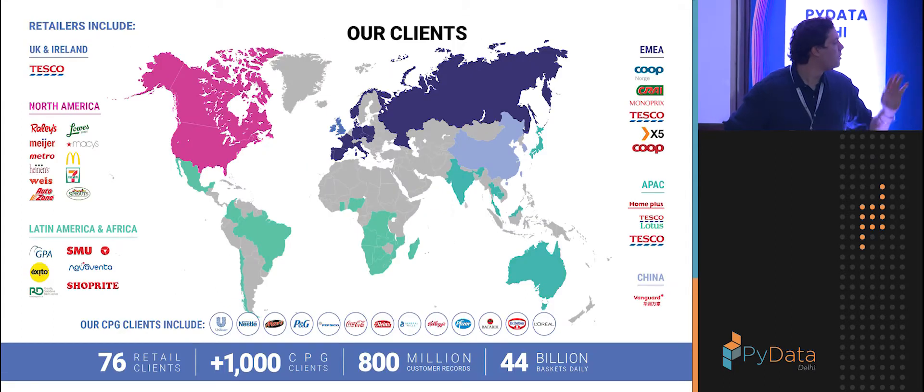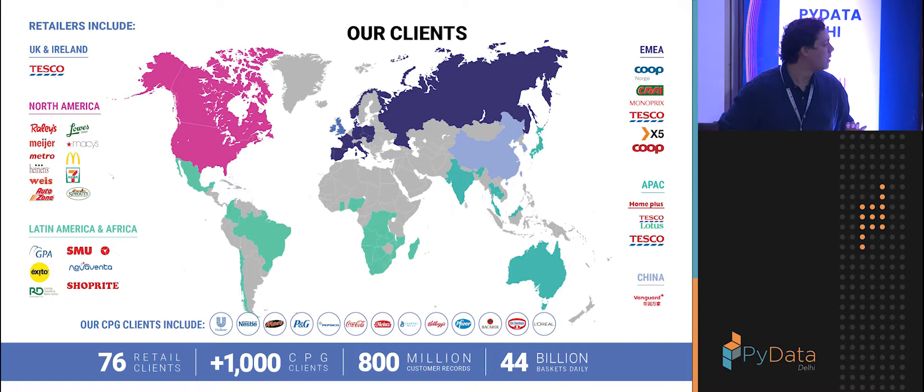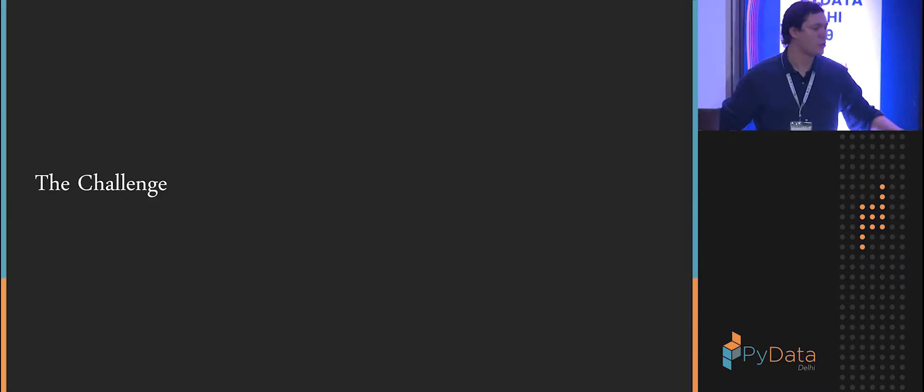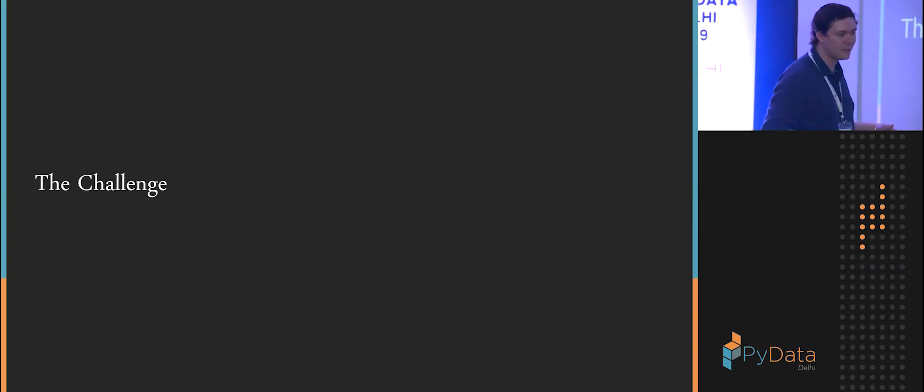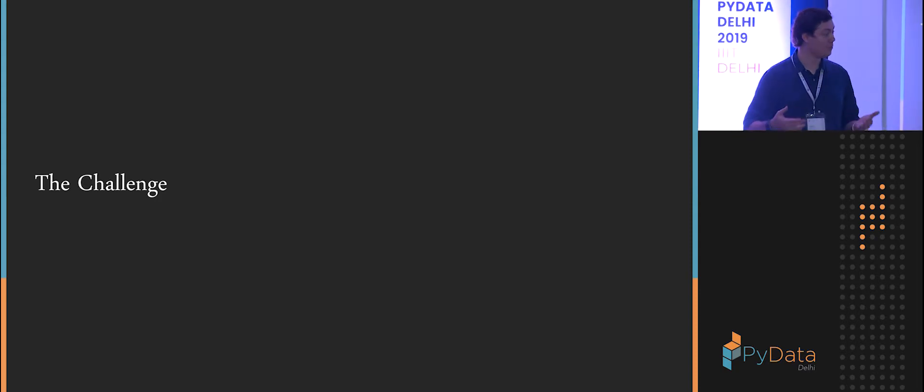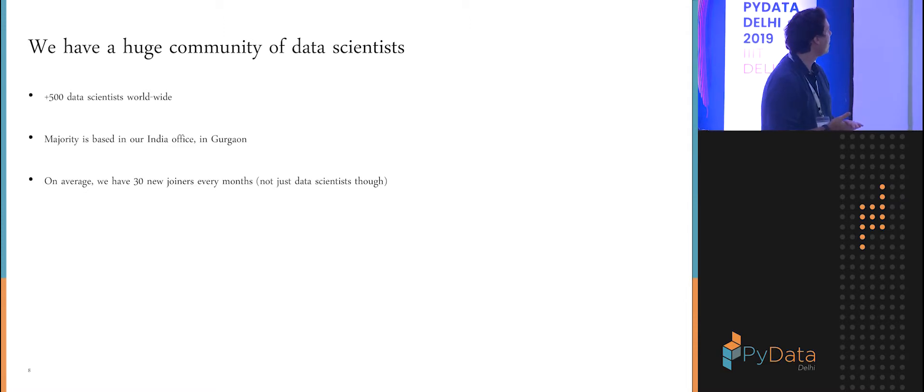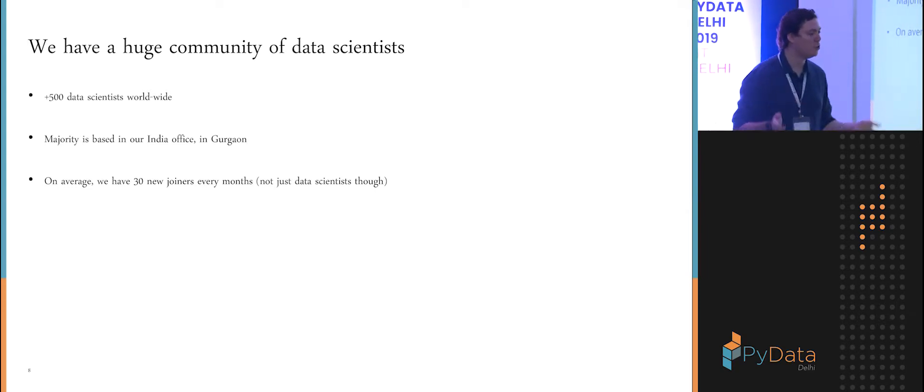We have clients all over the place in the world, which means we need a lot of data scientists. Currently, we have over 500 worldwide. So long story short, we have lots of data scientists, and that means we have to hire a lot, and therefore recruitment can become a bottleneck. We have a huge community of data scientists. The majority is based in India. We're going to the office and you have a range - we have 30 new joiners. It can be new people we hire or people who decide to move on and we have to backfill.